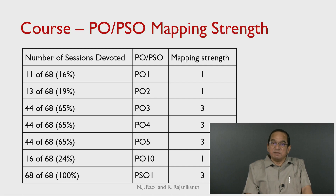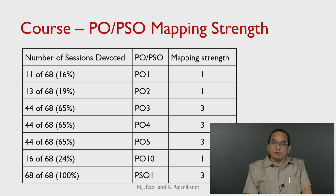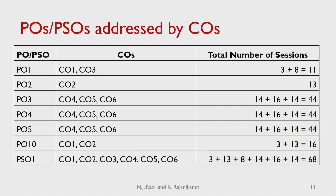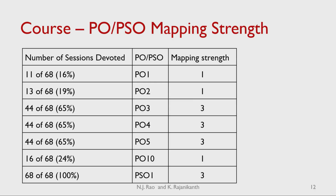Once we determine the mapping strength at the course level, the same value applies to individual CO-PO mappings. That means if the mapping strength of the course to PO1 is 1, then CO1-PO1 and CO3-PO1 each have a mapping strength of 1. CO2-PO2 mapping strength is 1, while CO4-PO3, CO5-PO3, and CO6-PO3 each have a mapping strength of 3. That is how the mapping strengths are plotted in the table.